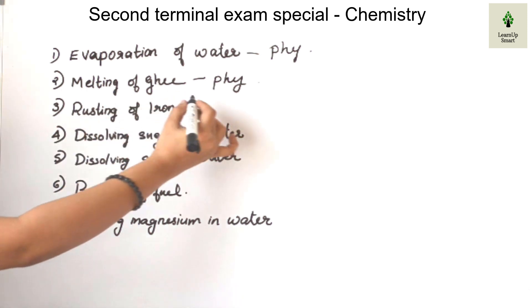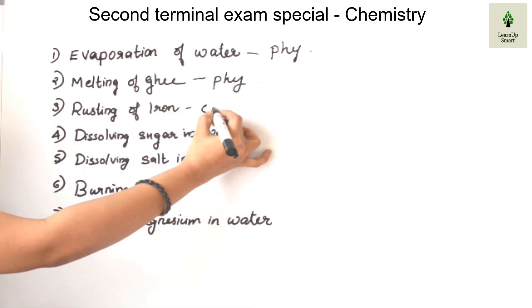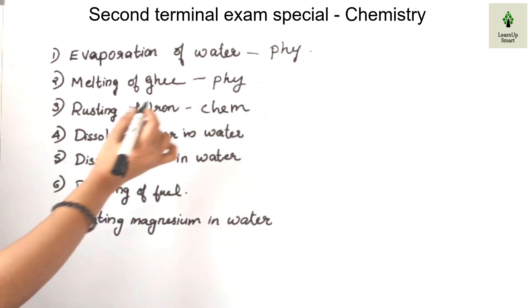The rust of iron is a chemical change. What is a chemical change?